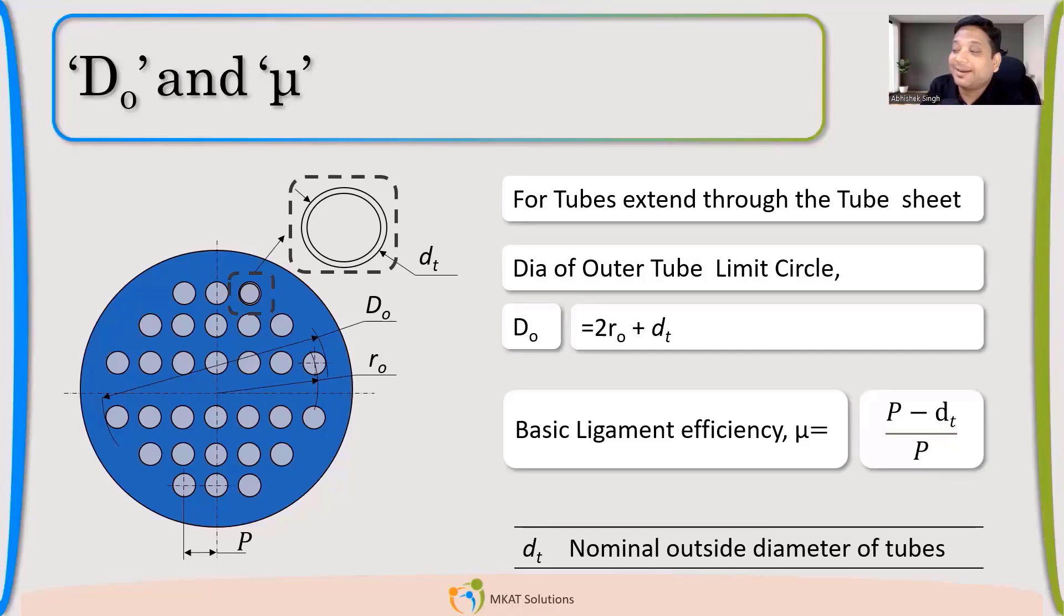So what has the material become now? Actually the ligament left, versus what the ligament was originally when it was complete. There was no hole, then P is complete material. Now it's only P minus DT which is left. So that is my ligament efficiency. If the tubes become smaller, my ligament efficiency will increase. That's my basic ligament efficiency.